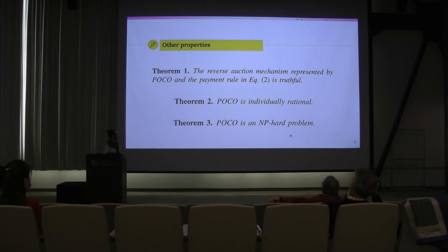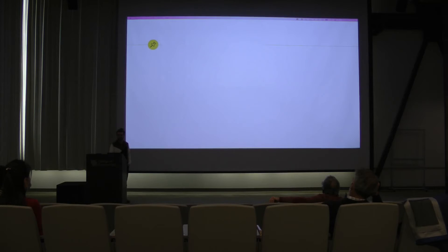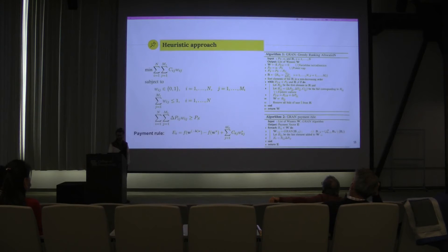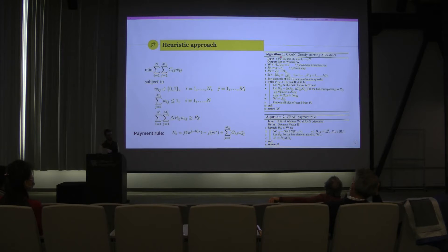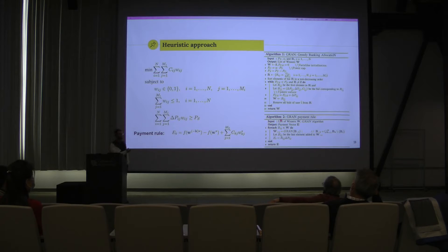We prove that POCO is an NP-hard problem, so we formulate a heuristic solution. We have Algorithm 1, which is RAN — Ranking Allocation — and it solves the optimization problem. We also have a heuristic payment rule, which helps us prove the truthfulness property for the heuristic solution as well.